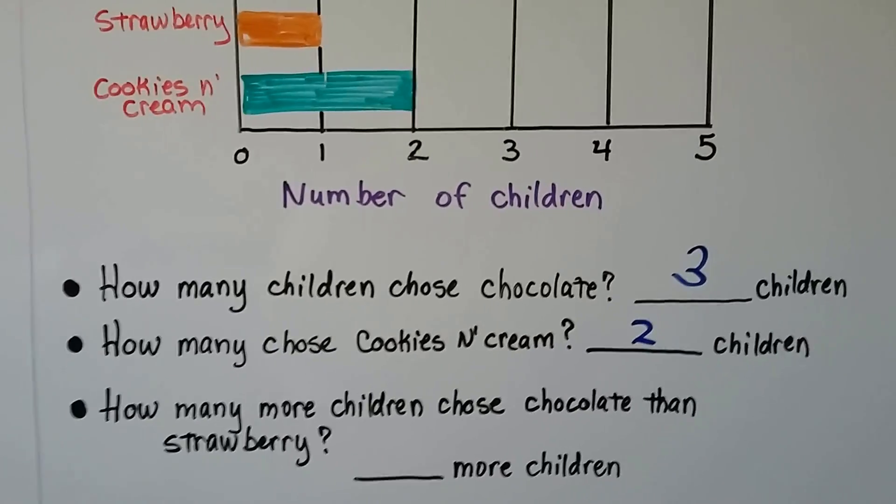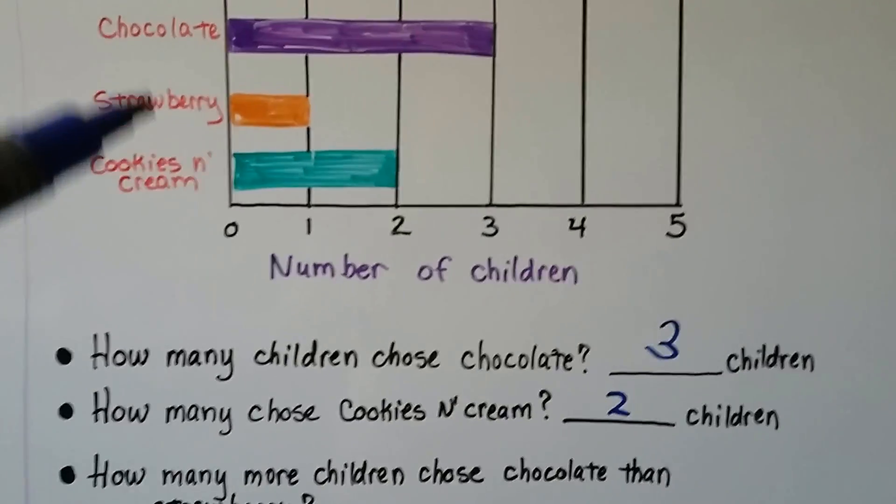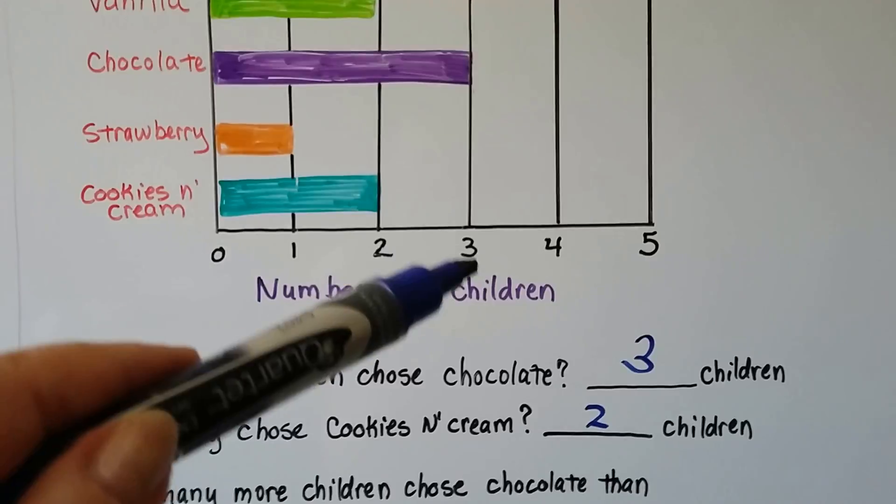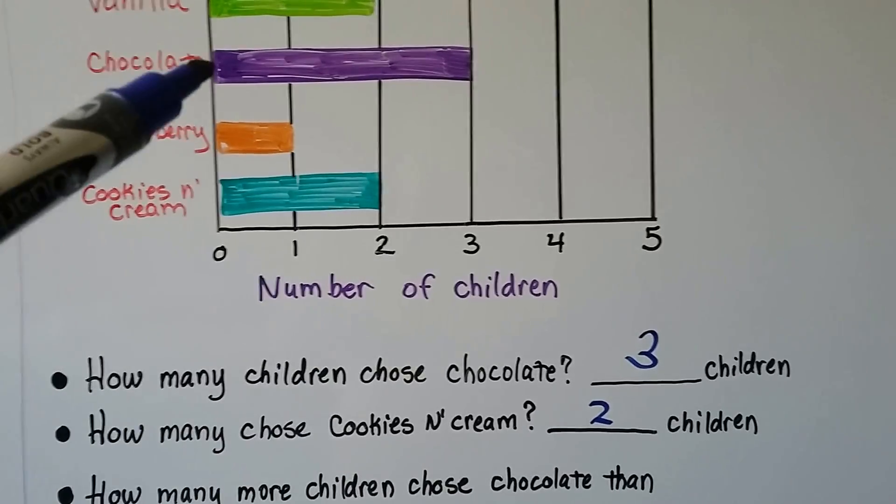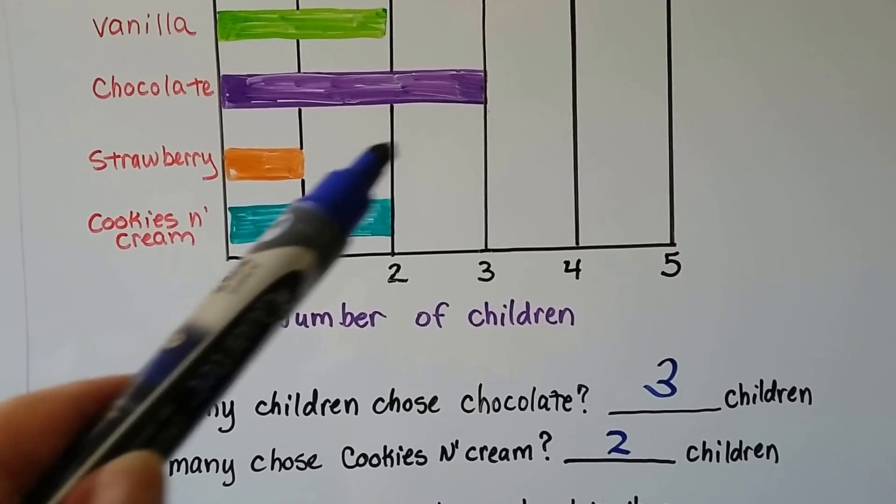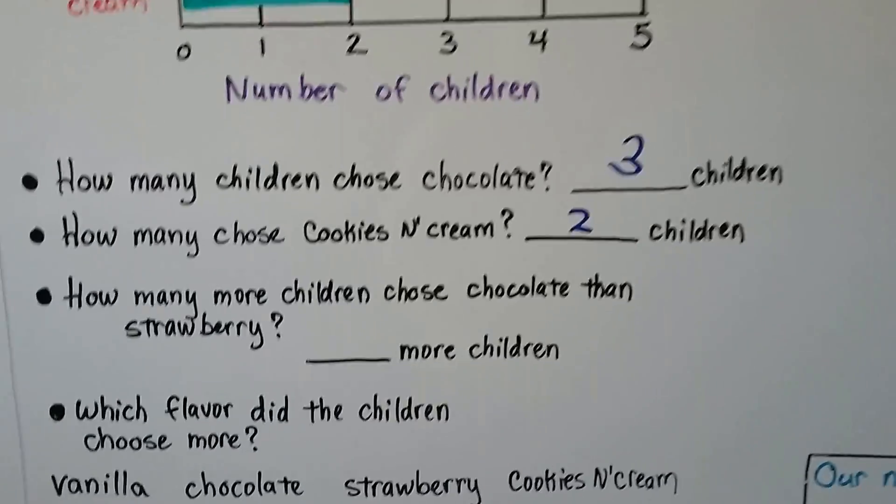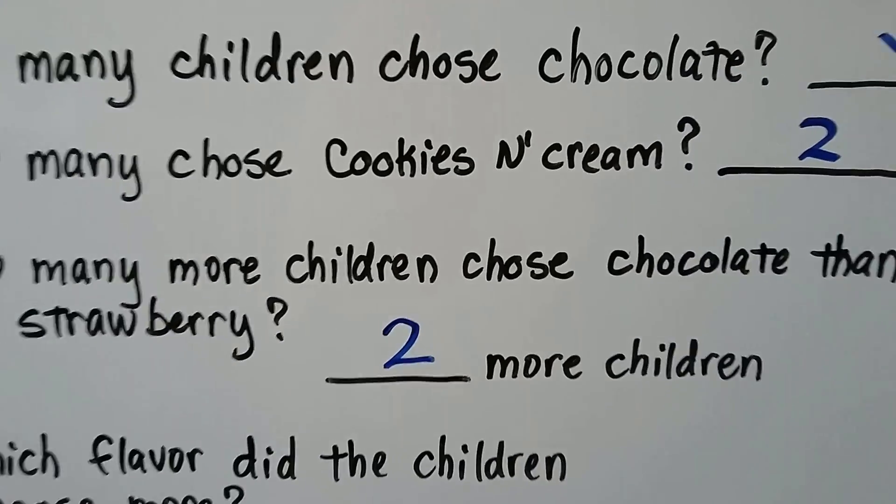How many more children chose chocolate than strawberry? We look at the chocolate. It's at the three. We look at the strawberry. It's at the one. And we can count from the scale. There's a difference of one, two. Two more children chose chocolate than strawberry.